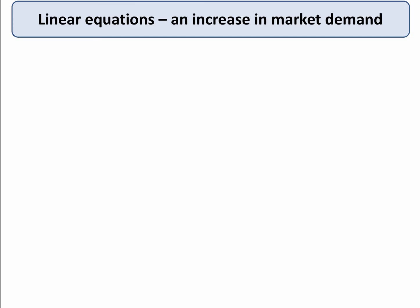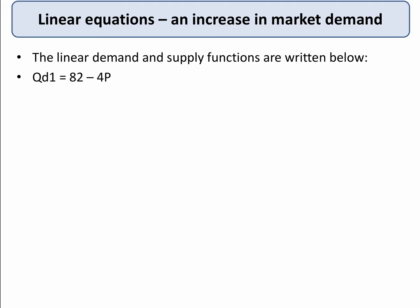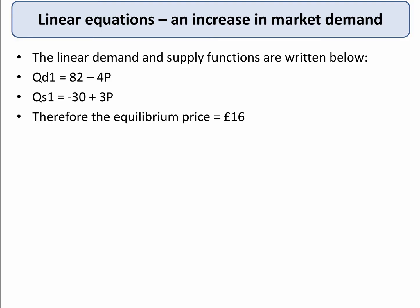Let's think about what happens in the market if there's an increase in market demand. Maybe before we look at the equations, you can visualise the effect of an outward shift in the demand curve for a product and the impact you'd expect to see both on the quantity and also on the market price. So here are our two equations again — Qd1 and Qs1 — reflecting the linear demand and supply functions. The equilibrium price is £16, as we had previously.